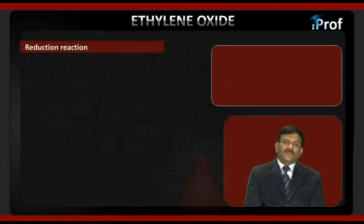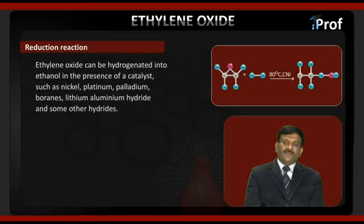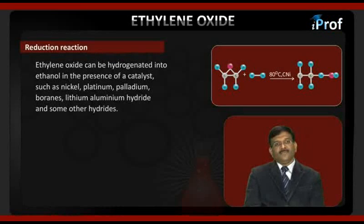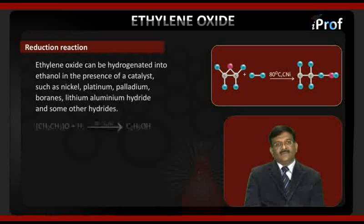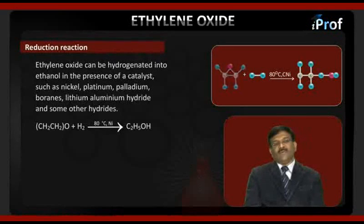For the next reduction reaction: ethylene oxide can be hydrogenated into ethanol in the presence of a catalyst such as nickel, platinum, palladium, boranes, lithium aluminum hydride, and some other hydrides. The reaction is ethylene oxide plus H₂ at 80 degrees centigrade in the presence of nickel — it gives C₂H₅OH.